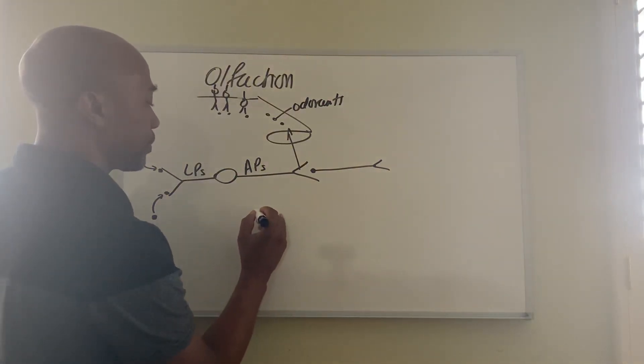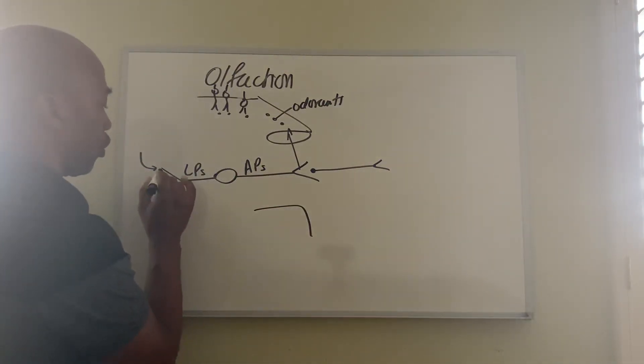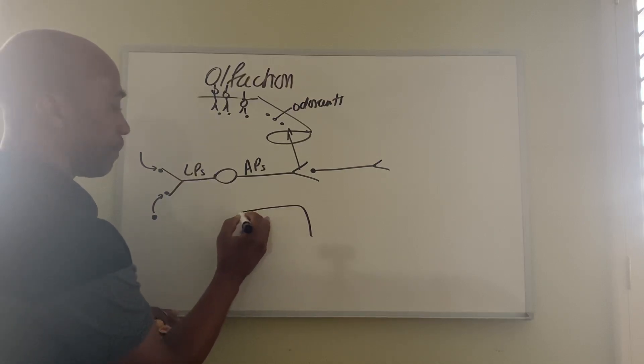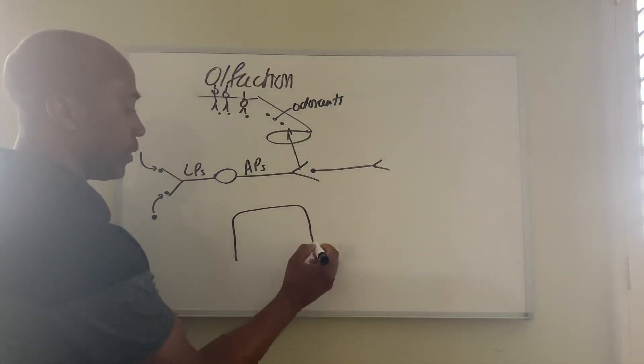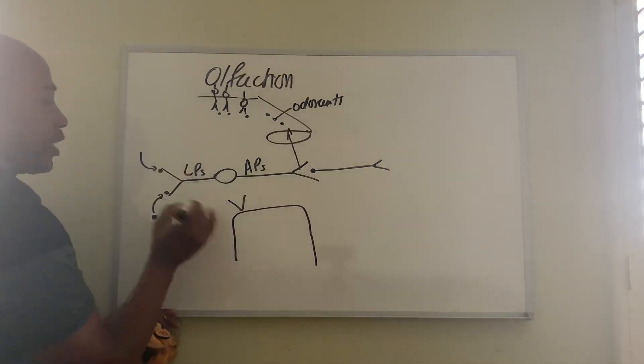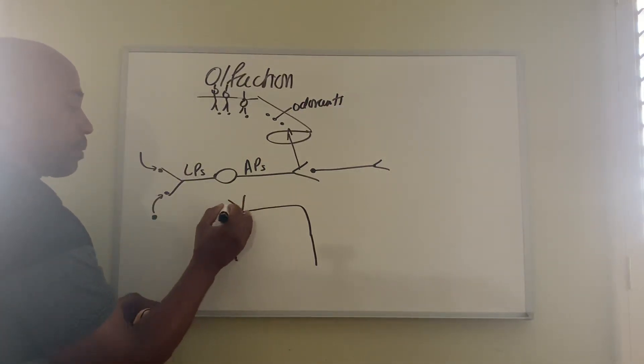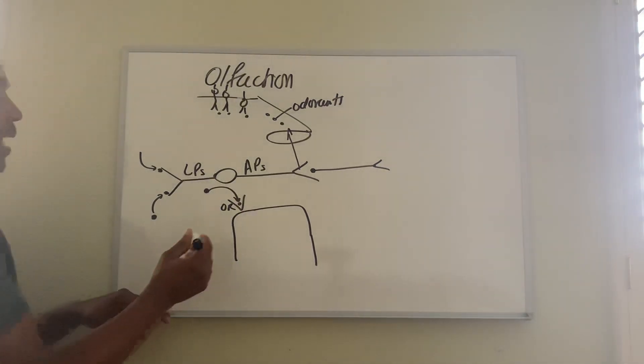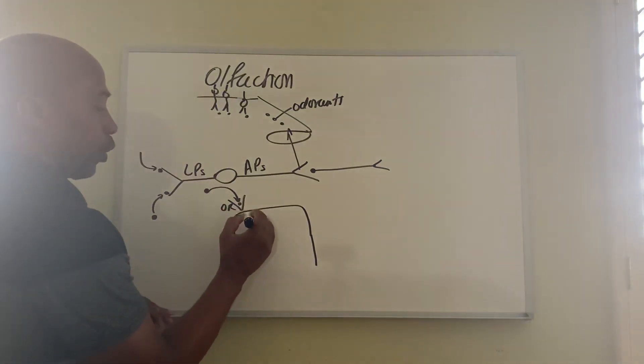This is a typical cell, your olfactory dendrite right here. Here on the dendrite you will have receptors, olfactory receptors, ORs, that will bind to your odorant. So the odorant binds to it, that's step one, and then that receptor will trigger...